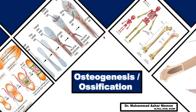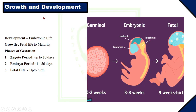Assalamu alaikum guys, welcome to Veterinary Studies YouTube channel. This is a series of lectures on veterinary anatomy. In the last lecture, our topic was osteology, where we discussed the composition, structure, functions, and types of bones. Now the question arises: how are these bones developed and formed in the animal body? Today our topic is osteogenesis or ossification. Before going to our topic, I want to tell you about the difference between growth and development.